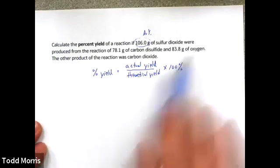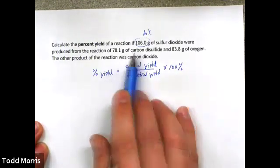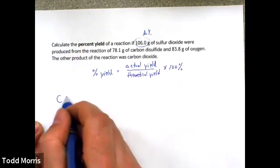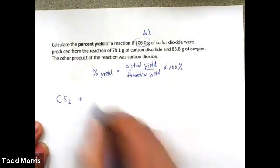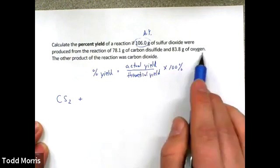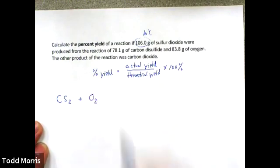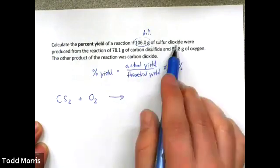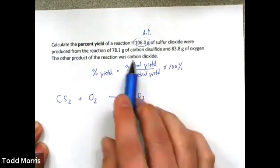We start with a balanced equation. The reactants are carbon disulfide (CS2) plus oxygen. Remember, oxygen is one of the seven diatomic elements, so it exists as O2, not O. The products are sulfur dioxide (SO2), which is what we're after, and carbon dioxide.